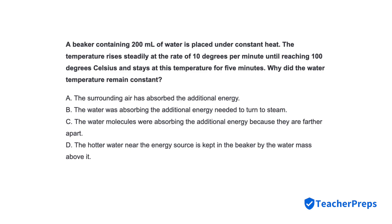A beaker containing 200 milliliters of water is placed under constant heat. The temperature rises steadily at the rate of 10 degrees per minute until reaching 100 degrees Celsius, and stays at this temperature for 5 minutes. Why did the water temperature remain constant? Correct response is letter B, the water was absorbing the additional energy needed to turn to steam.